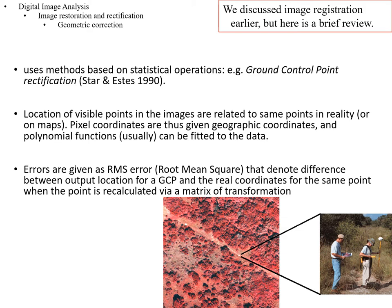All of these methods are based on statistical operations. We call this ground control point rectification. We look at the image, find features we can readily identify, and find those same points in either an existing rectified image or in the field. We relate the image coordinates — row and column number — with the latitude/longitude or UTM XY coordinate, and relate those two using polynomial functions, such as y = a + bx or higher-order equations.